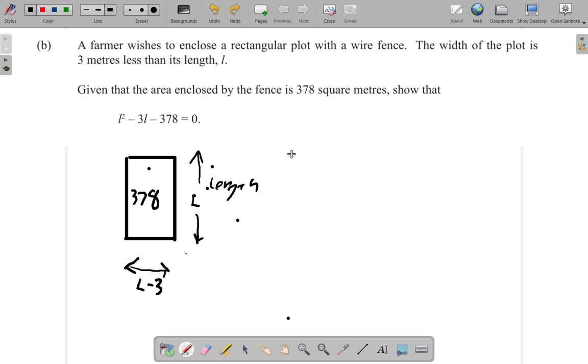So what this is really saying is that the length multiplied by the width, which is L minus 3, you have to put it in brackets. So the length times the width, length times L minus 3, is equal to 378.